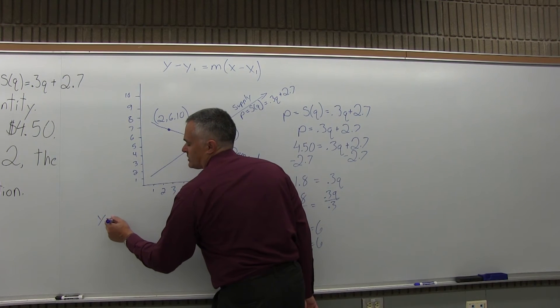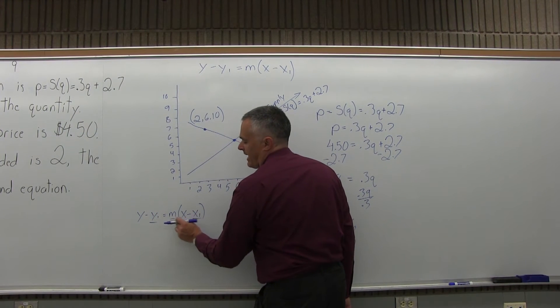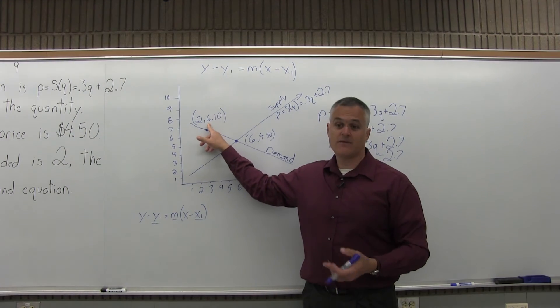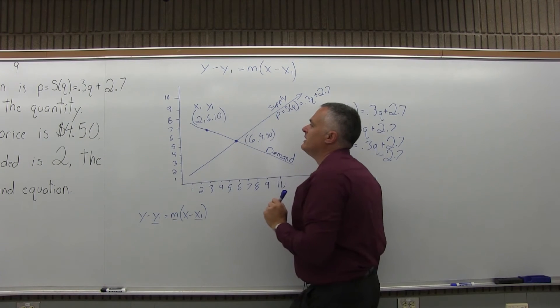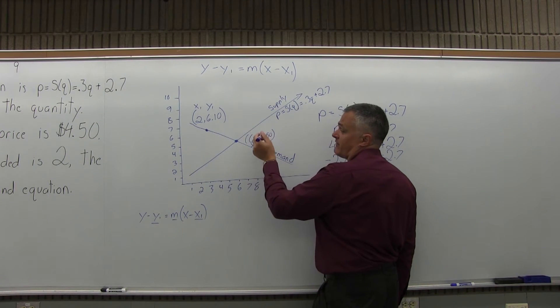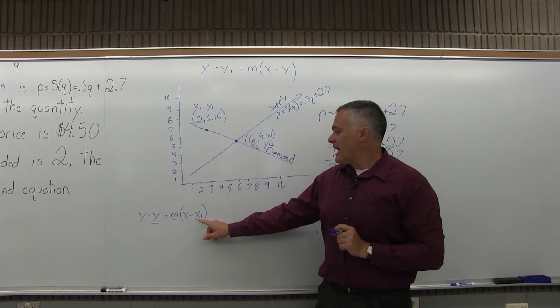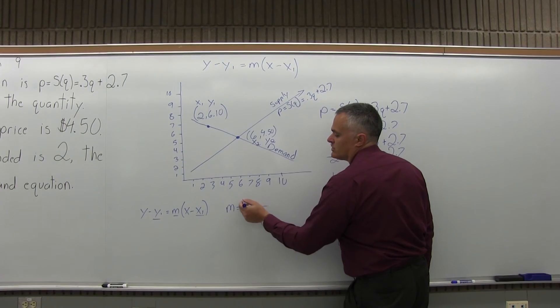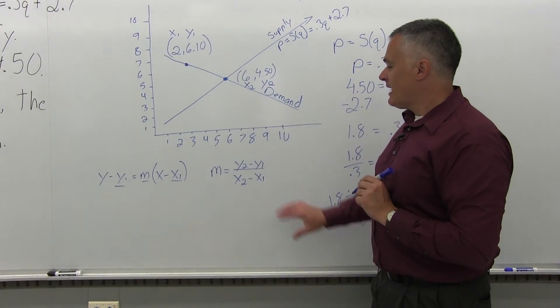I'm going to use Y minus Y1 equals M times X minus X1 and fill in values for Y1, M, and X1. Let me label my points. This point (2, 6.10) I consider to be the first point, so its X value of 2 will be X1 and its Y value of 6.10 will be Y1. This point (6, 4.50) is point 2, so X2 is 6 and Y2 is 4.50.